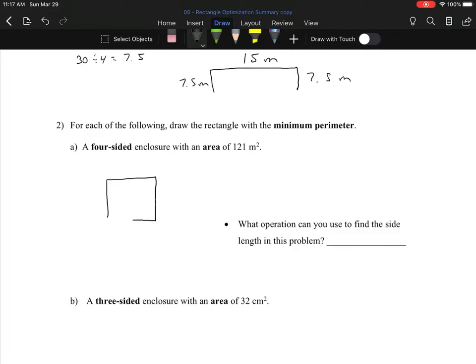Draw the rectangle with minimum perimeter. So we want area 121, so we do want a square here and these sides are going to be x and x. But we want the area to be 121, so x squared would be 121. Square root of 121 is 11, so each of these is 11 meters. Four-sided figure, so a square again. What operation to find the length in this problem? It's a square root that we use.